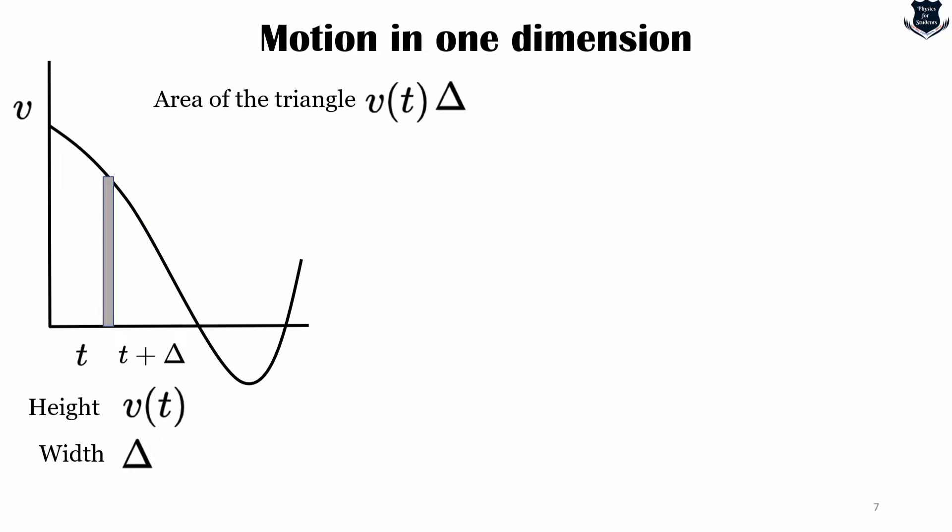For example, we draw another graph and we get the height as v(t) and this is the kind of graph that we are covering. The area of this rectangle v(t) times delta is equal to the displacement of the particle during the time interval from t to t plus delta, where delta can be considered as a very small minute change.